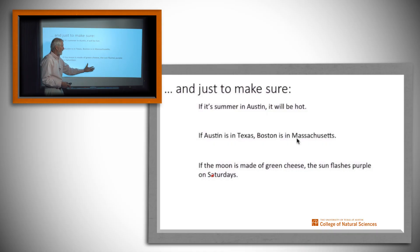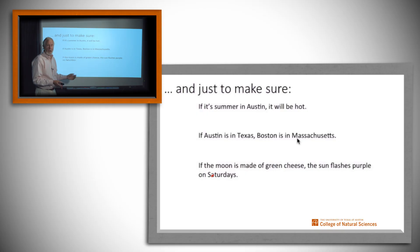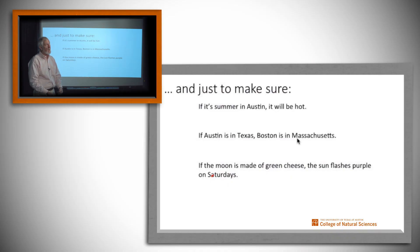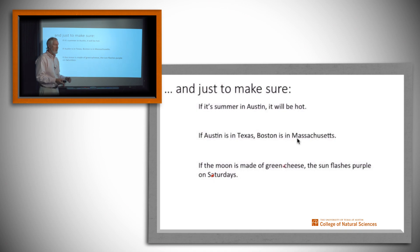What about: if the moon is made of green cheese, the sun flashes purple on Saturdays? The moon is not made of green cheese, so the antecedent is false. As we saw from the truth table, that means the implication is true no matter what the truth value of the consequent is. So 'if the moon is made of green cheese, the sun flashes purple on Saturdays' is a true statement — and so is 'if the moon is made of green cheese, the sun does not flash purple on Saturdays.' Both are true simply because the antecedent is false.